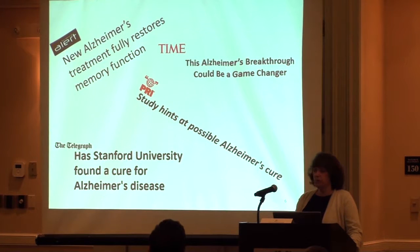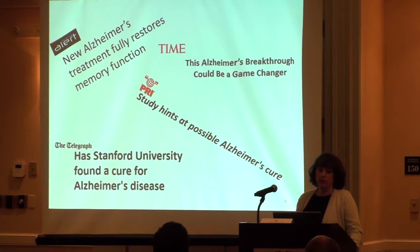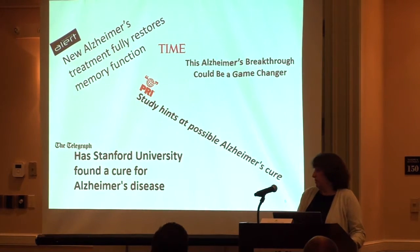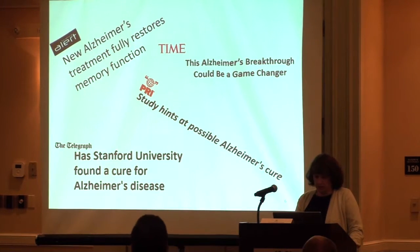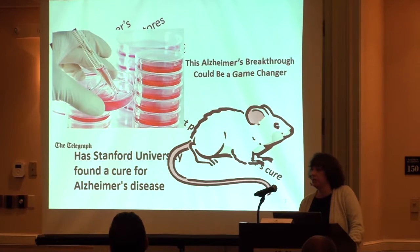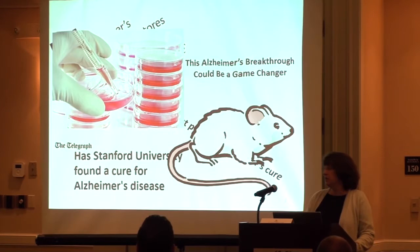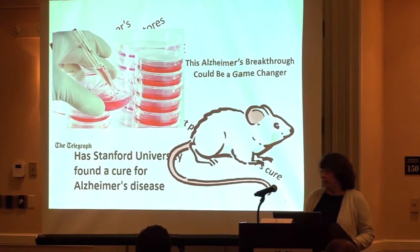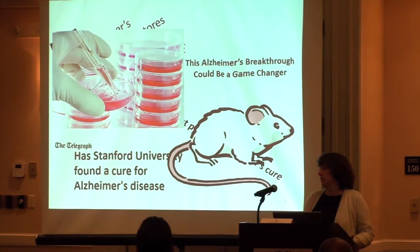Any day we can pick up the newspaper or look at different magazines and see that almost any disorder has been cured already. For example, a review of Alzheimer's disease on the internet claims new treatments that fully restore memory function, breakthroughs that could be game changers, or even a cure. But when looking at those papers more closely, we see these are cell-based therapies or mouse studies, and the direct clinical transferability is somewhat questionable. If you were only looking at those initial headlines, you'd think you don't need to do research anymore.